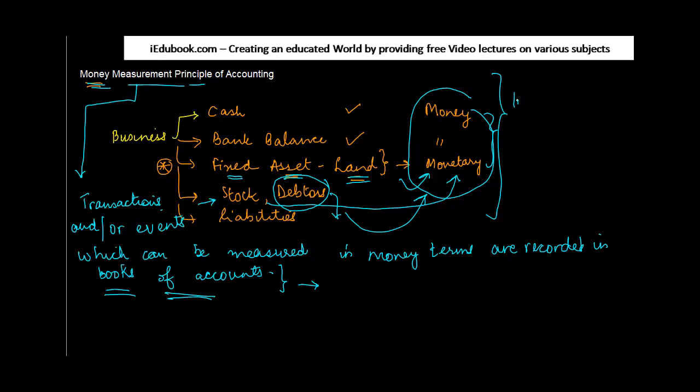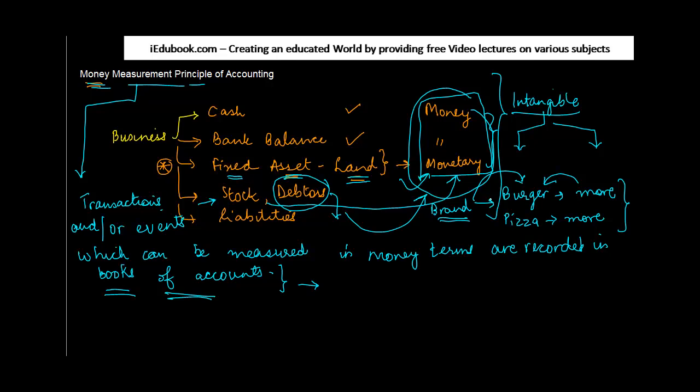There could be certain intangibles. Intangibles means something which cannot be felt, but they are very much there. And I always take this example of pizza chains or burger chains. Normally, the price at which they sell the burger is more than the one which is available at a roadside place or maybe a smaller shop, mom and pop shop. Why? Because they carry certain particular brand values. And because of that brand, you are ready to pay more for this. Now these brands are normally, if you generate them on your own and different countries follow different accounting principles, this brand value is normally not recognized in the books of accounts unless you have actually paid for it.